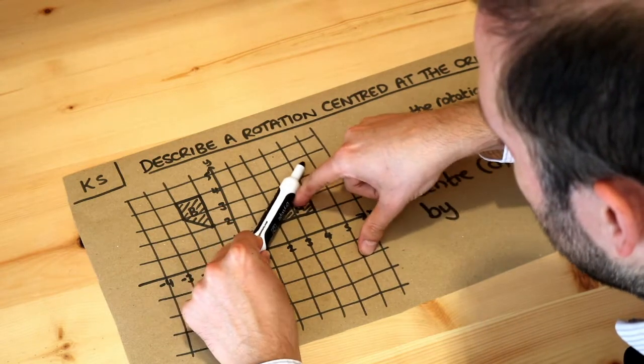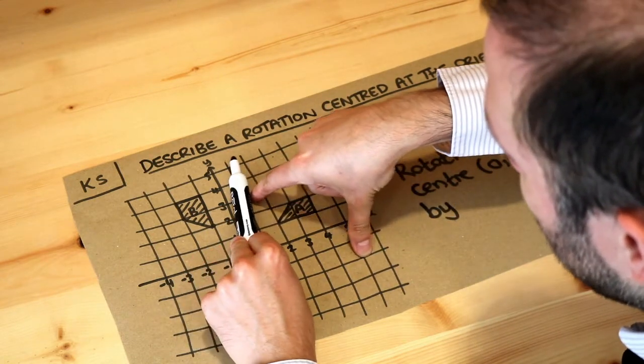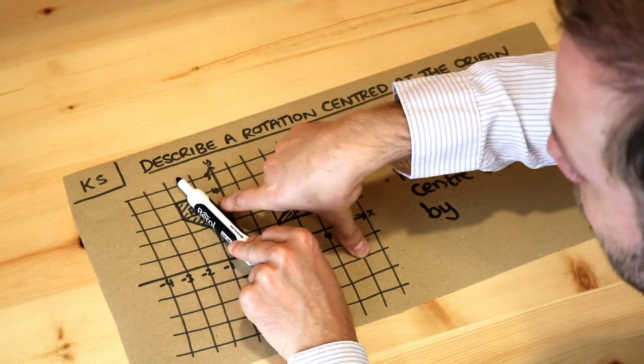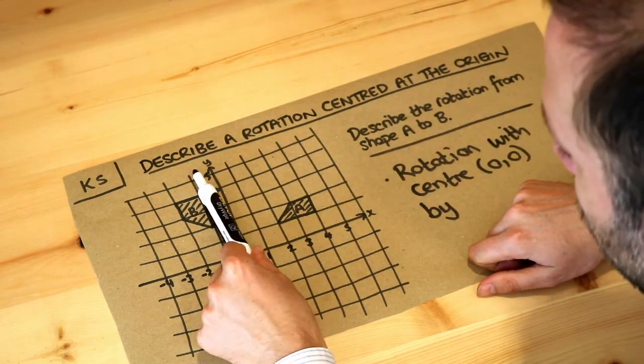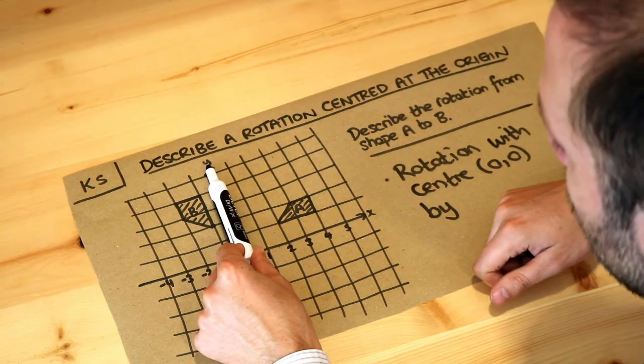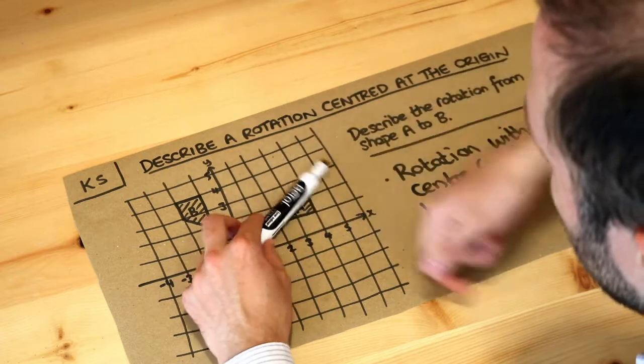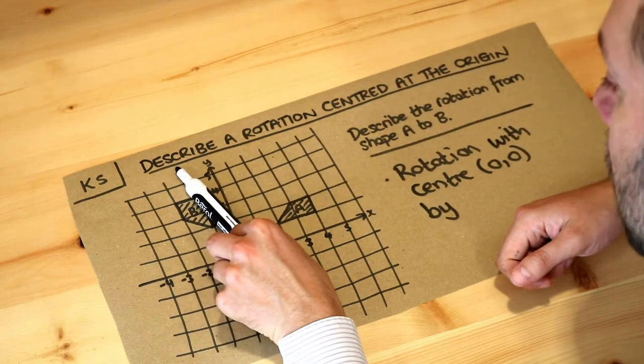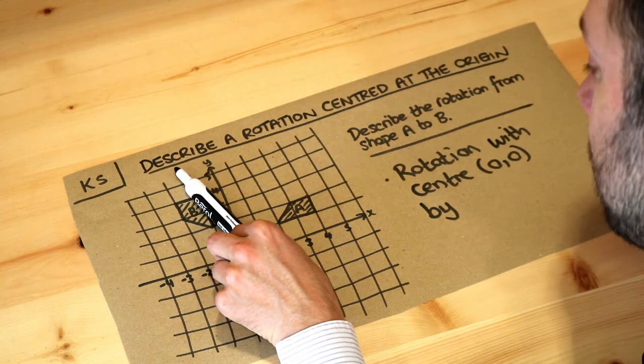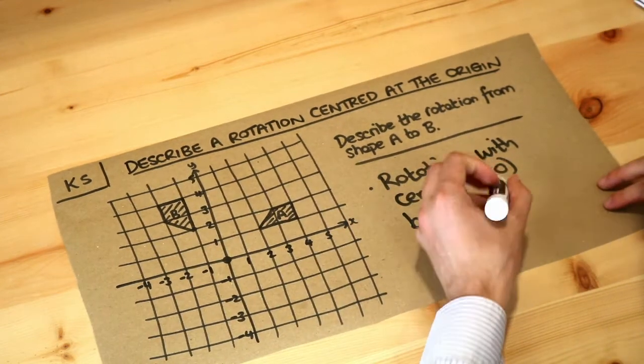Can you see that my pen is rotating anti-clockwise? It's called anti-clockwise because it's the opposite direction a clock hand would go. A clock hand would spin like this, but this is going the opposite way, so it's anti-clockwise or counterclockwise.